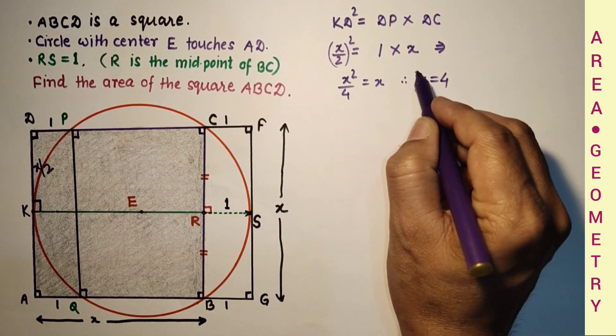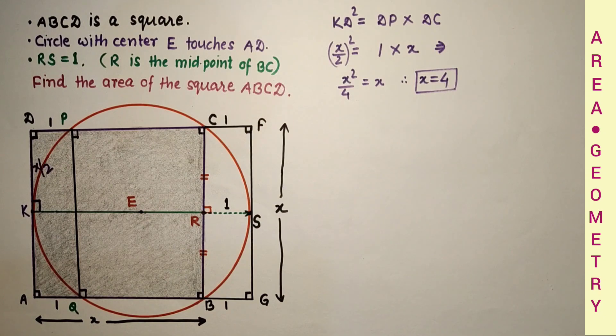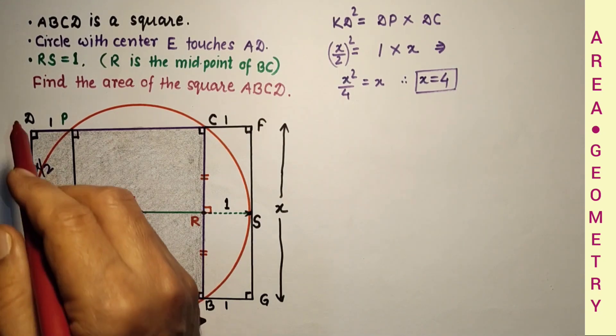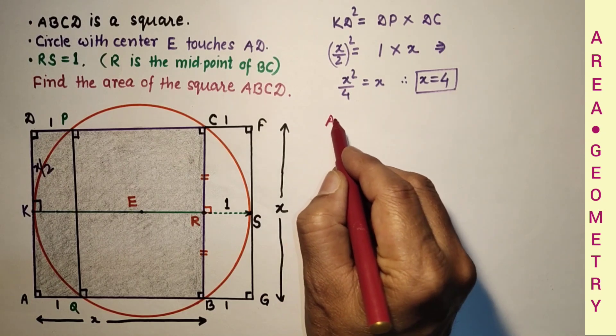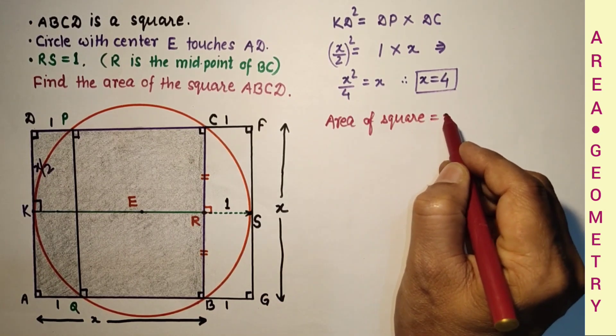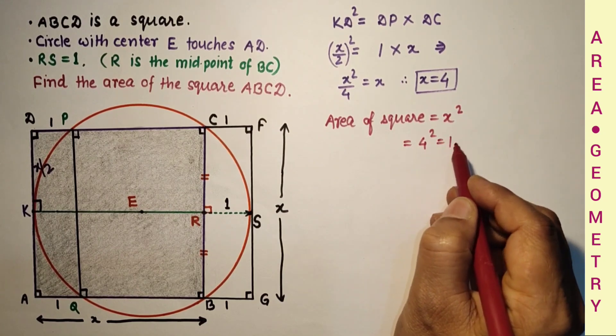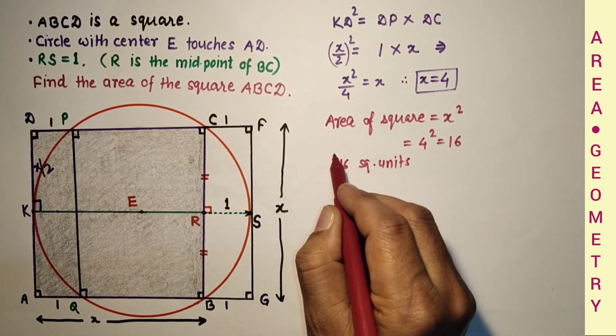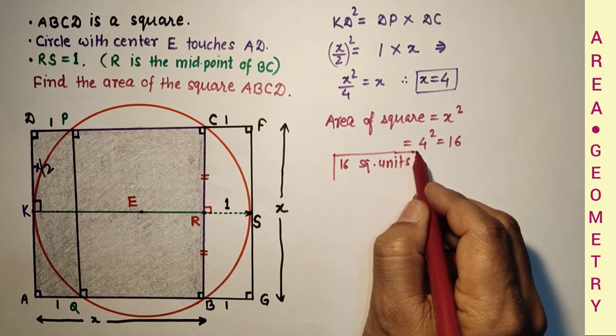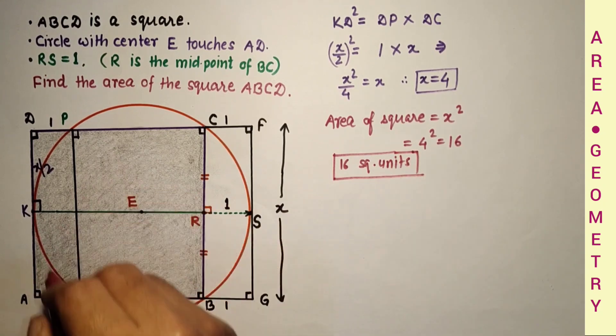So we found side of square is 4. Therefore, area of the square will be side square, which is 4 square, and that is 16 square units. This is the area of the square, the shaded portion.